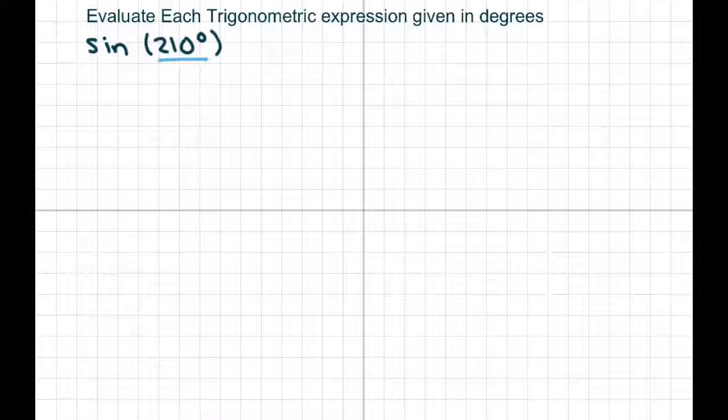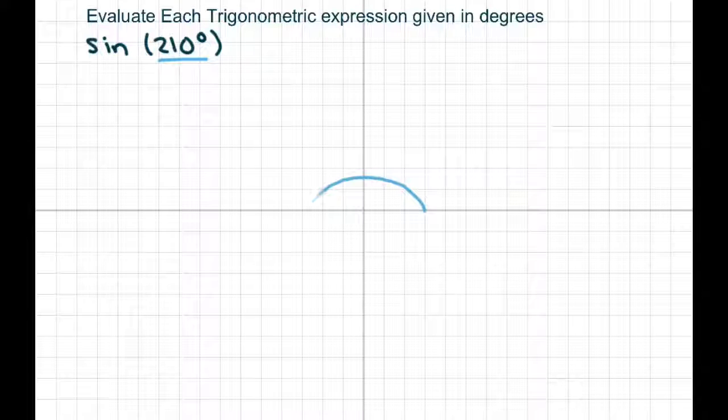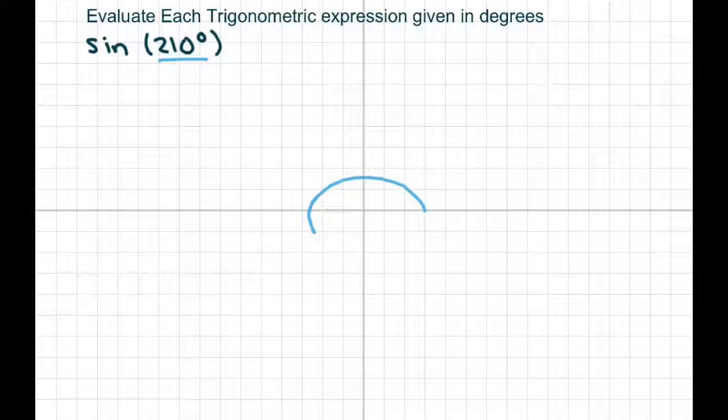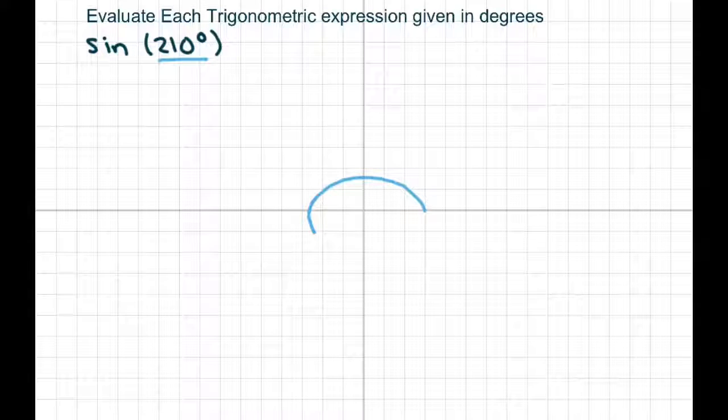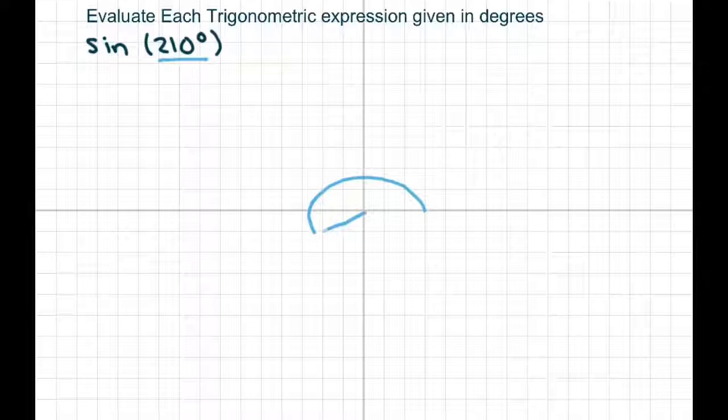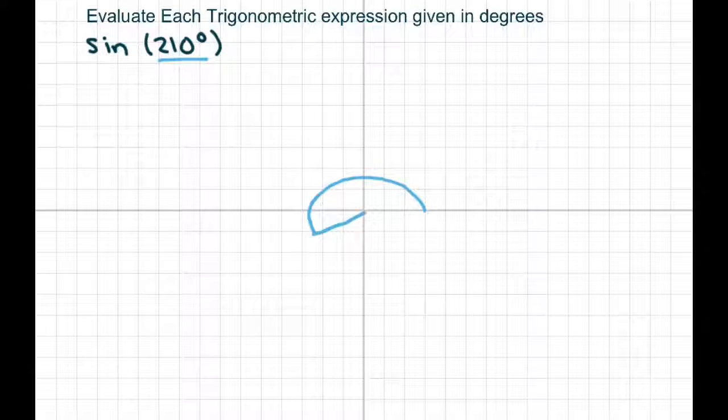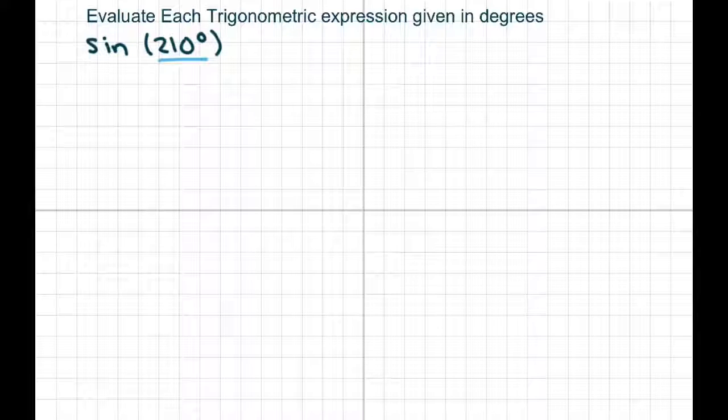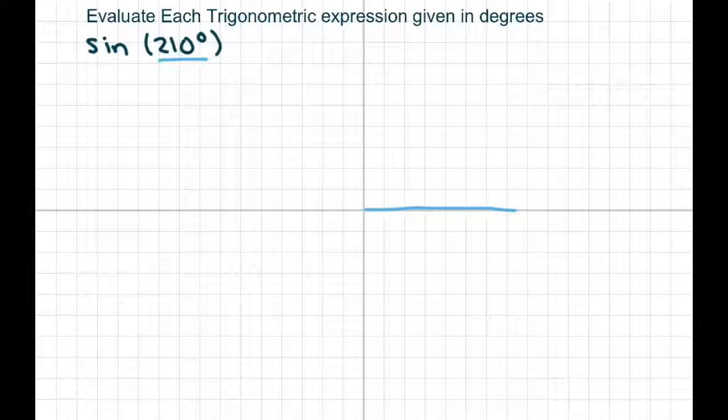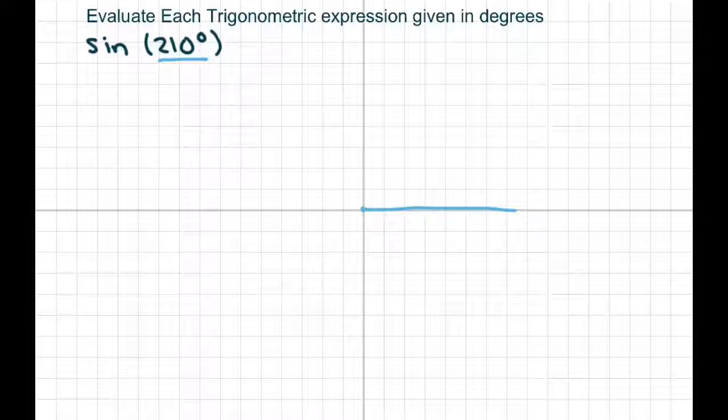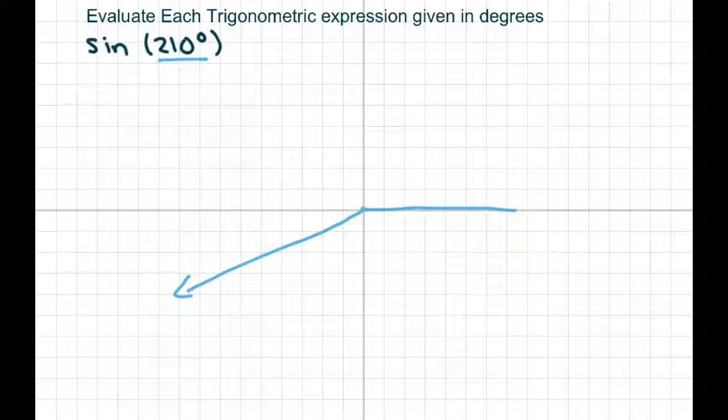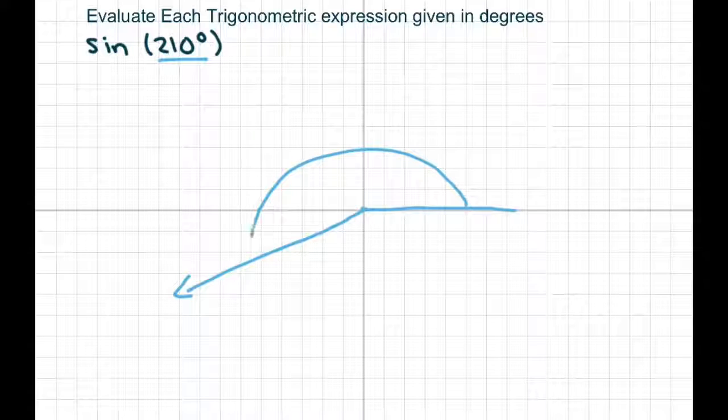We know that 210 degrees is 180 plus 30 more, so it's 30 degrees down in here. Now I'm going to make this a little bigger. I'm going to go out a little more, and our radius is going to be 1. So 210 will be about there. There's your angle, 210 degrees.